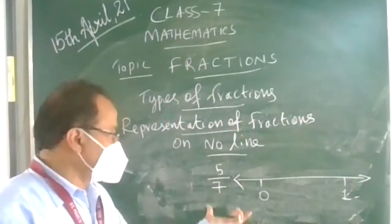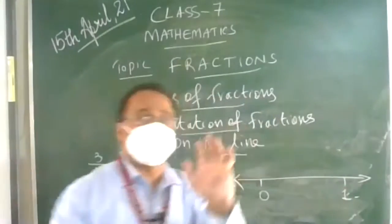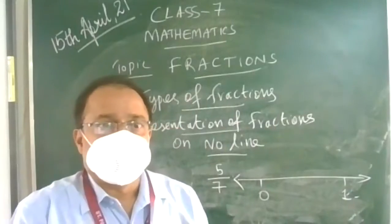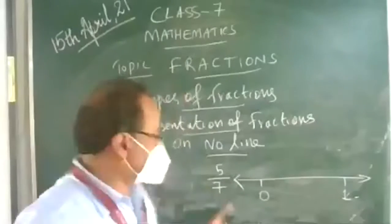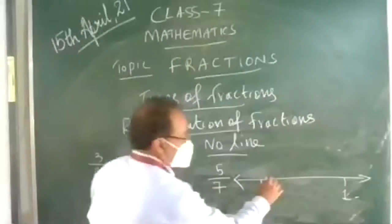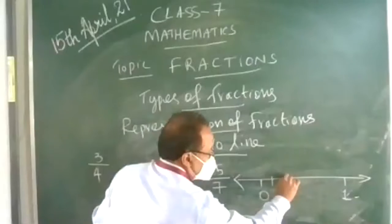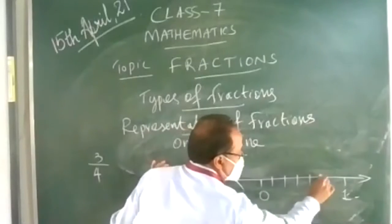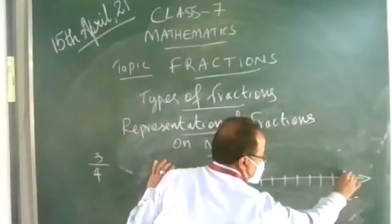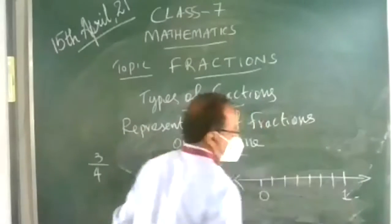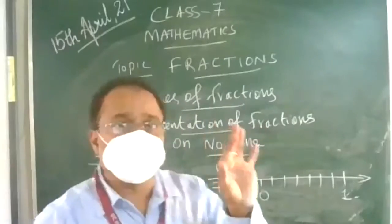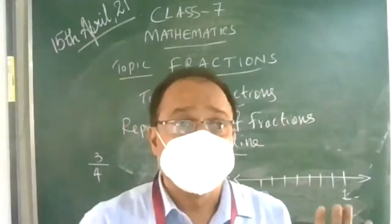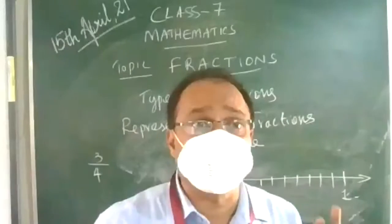Draw a number line with 0 and 1. Divide this into 7 equal parts — 1, 2, 3, 4, 5, 6, and 7. You can do this by simply marking theoretically; we are not doing it by exact measurement.